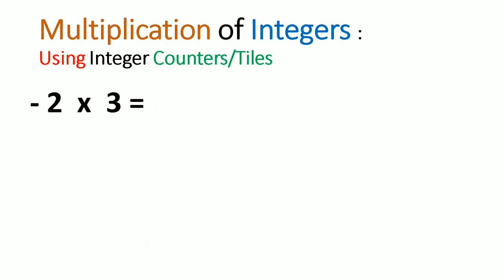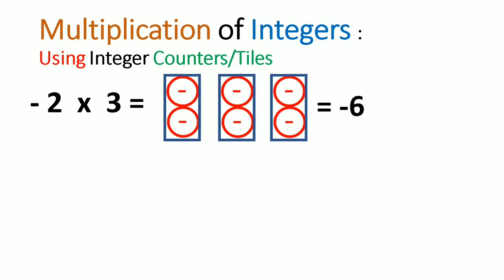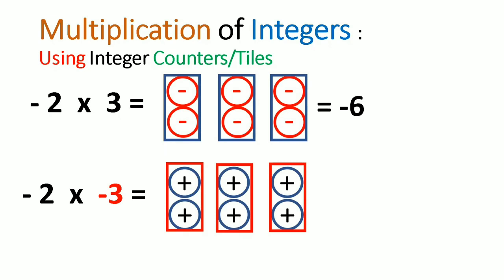Recall that negative 2 times 3 was equivalent to negative 6. But what if we wanted to find negative 2 times negative 3? These are two different problems — the first had positive 3, the second in red has negative 3. Recall we said when we see a negative sign, we interpret it as the opposite of. So what is the opposite of negative? It's positive. So the 6 tiles that were negative would now become positive tiles. Therefore, negative 2 times negative 3 is equivalent to positive 6.